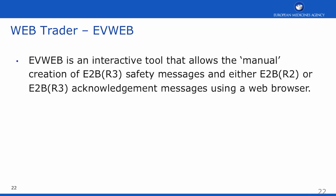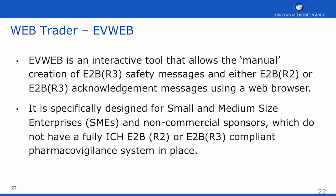EVWeb is an interactive tool that allows the manual creation of E2B R3 safety messages, and either E2B R2 or E2B R3 acknowledgements can be created using a web browser. It is specifically designed for small and medium-sized enterprise organisations and non-commercial sponsors which do not have a fully ICH E2B R2 or R3 compliant pharmacovigilance system.